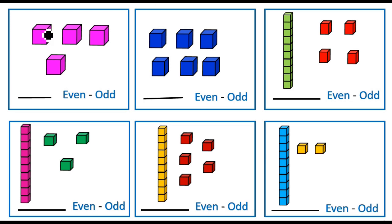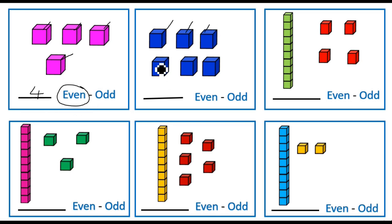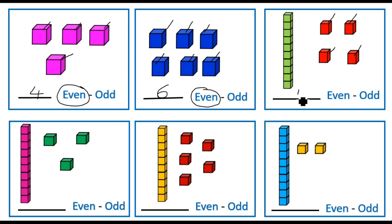Now: one, two, three, four — four blocks, four is an even number, circle even. Here: one, two, three, four, five, six — six blocks, six is an even number, circle even. This is a rod containing ten blocks, and after ten you have eleven, twelve, thirteen, fourteen — so write fourteen. Fourteen is an even number because it ends with four.